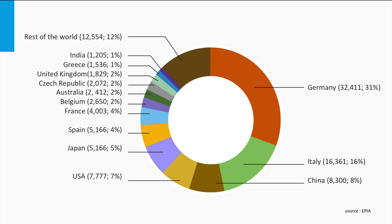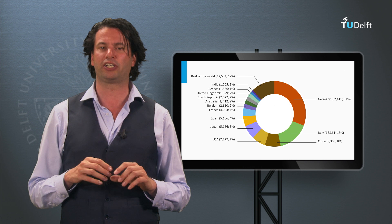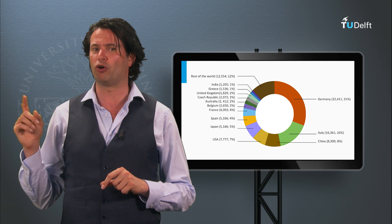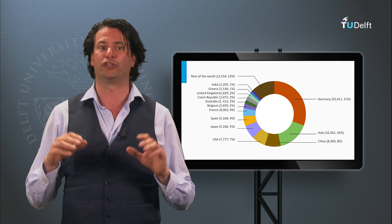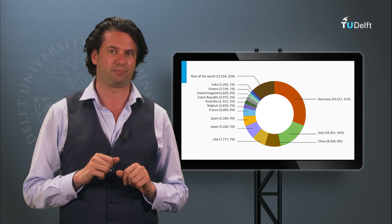Considering that Germany lies within an area with a relatively low radiation level compared to the rest of the world, the large contribution of solar to Germany's electricity production shows the promising potential of solar energy for the sunnier parts of the world.